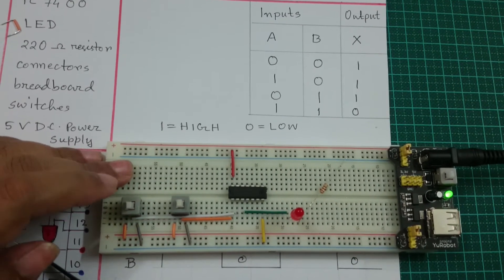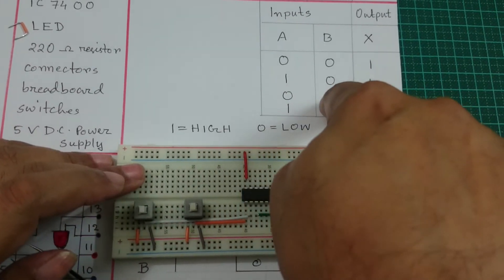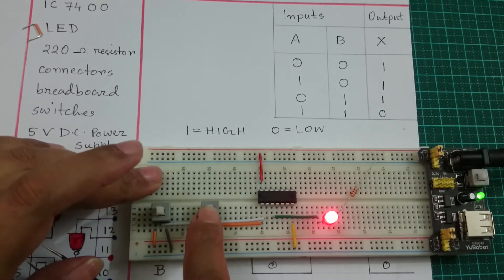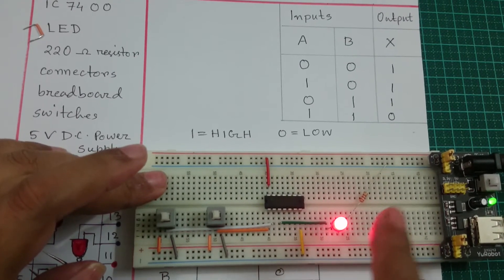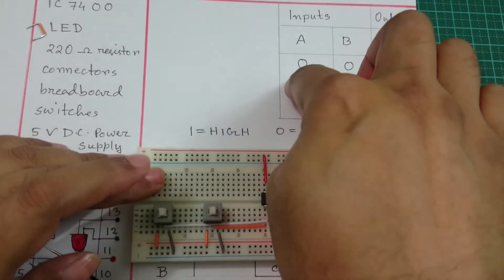If this is input A and this is input B, when A is 0 and B is 1, the output is 1 according to the truth table.